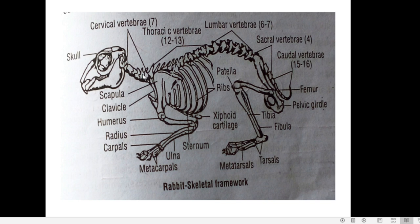The vertebral column can be distinguished into five regions. The first region is the cervical region, the second is the thoracic region, the third is the lumbar region, the fourth is the sacral region, and the fifth is the caudal region. Cervical corresponds to the neck region, thoracic to the trunk, lumbar to the abdominal region, sacral to the hip region, and caudal to the tail region.